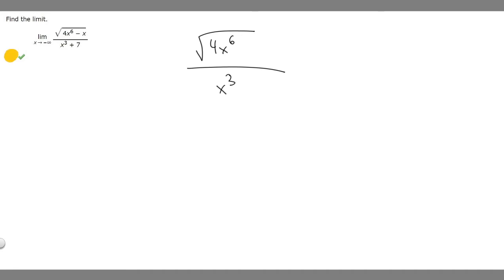Now what we want to do is simplify our top. This is basically 4x to the 6th to the 1 half. What we can do is simplify this by taking the square root of our coefficient out front. So the square root of 4 is going to be 2.